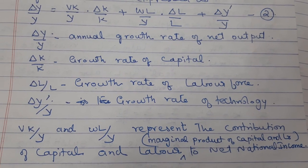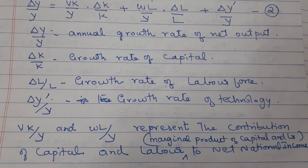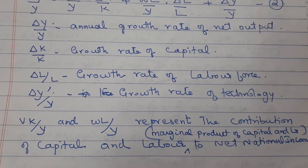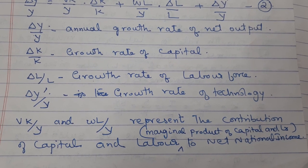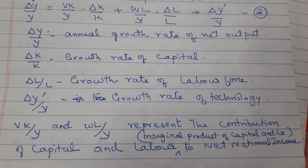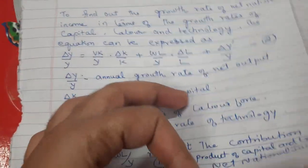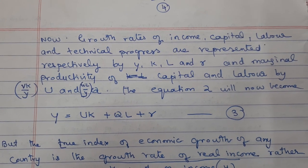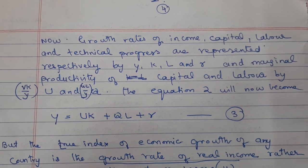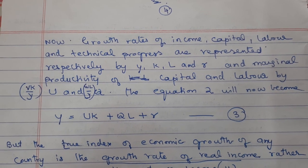In this equation: ΔY/Y is the annual growth rate of net output; ΔK/K is the growth rate of capital; ΔL/L is the growth rate of labour force; and ΔY'/Y is the growth rate of technology. VK/Y and WL/Y represent the contribution of capital and labour — that is, the marginal product of capital and labour — to net national income. The growth rates of income, capital, labour, and technical progress are represented respectively by Y, K, L, and R, and the marginal products by U (VK/Y) and Q (WL/Y).